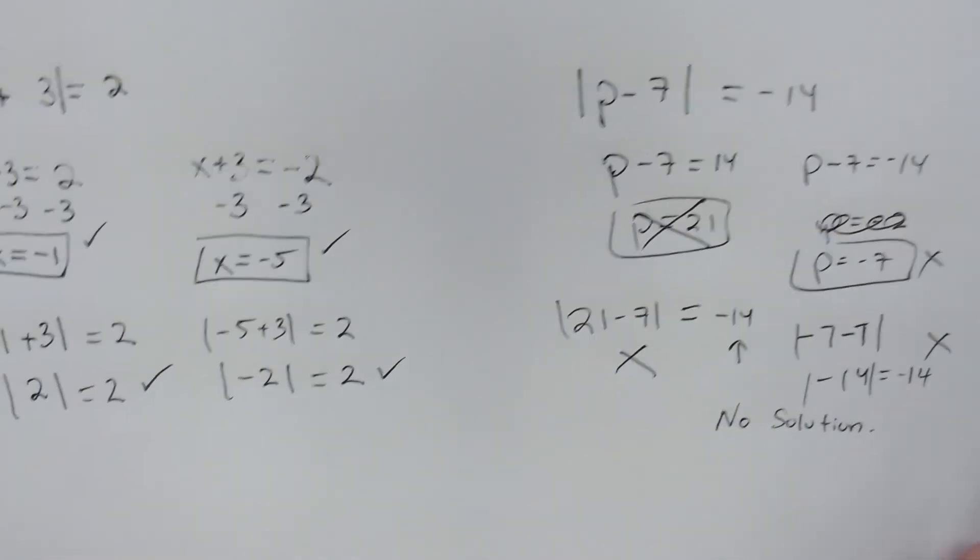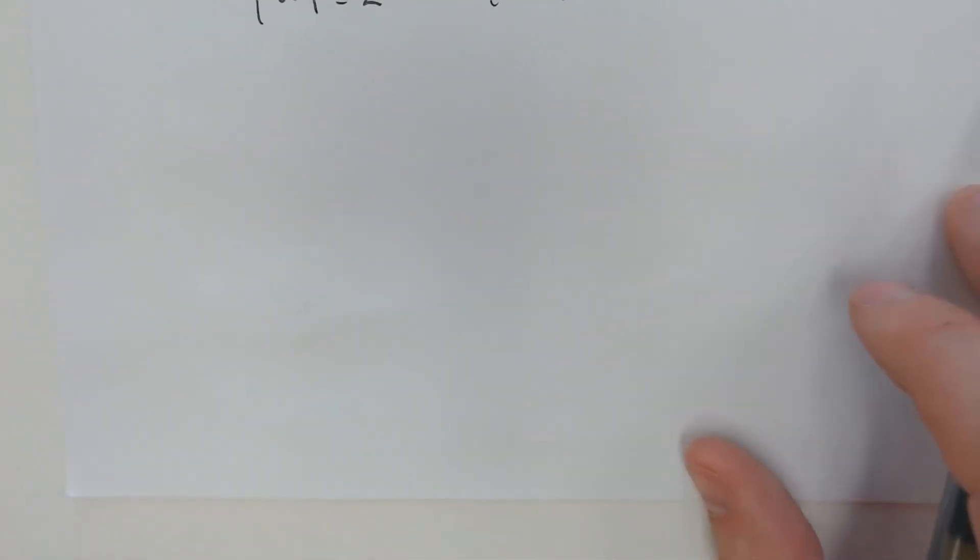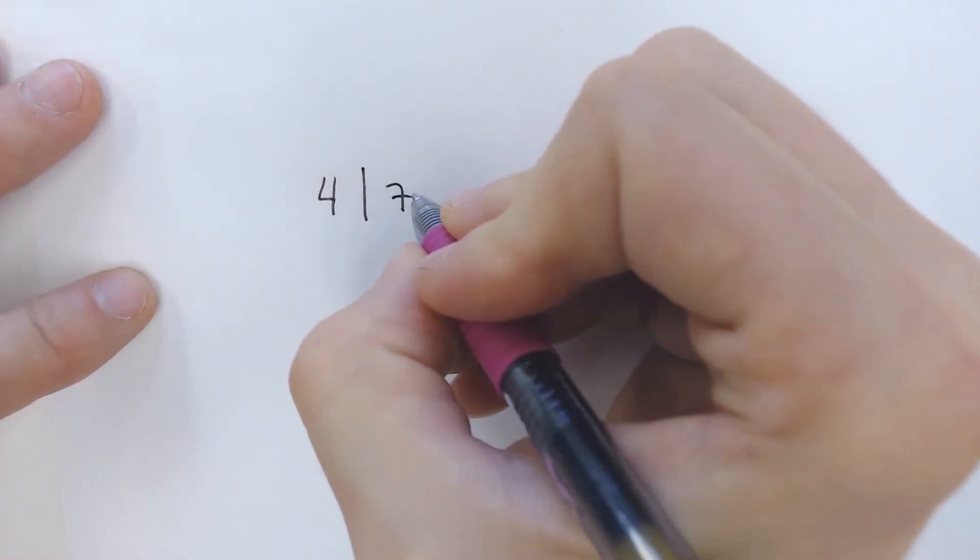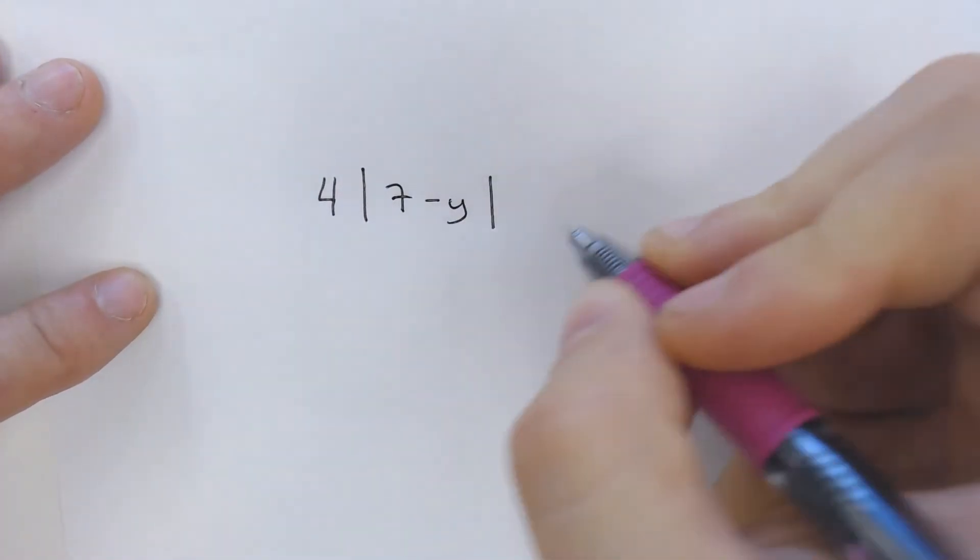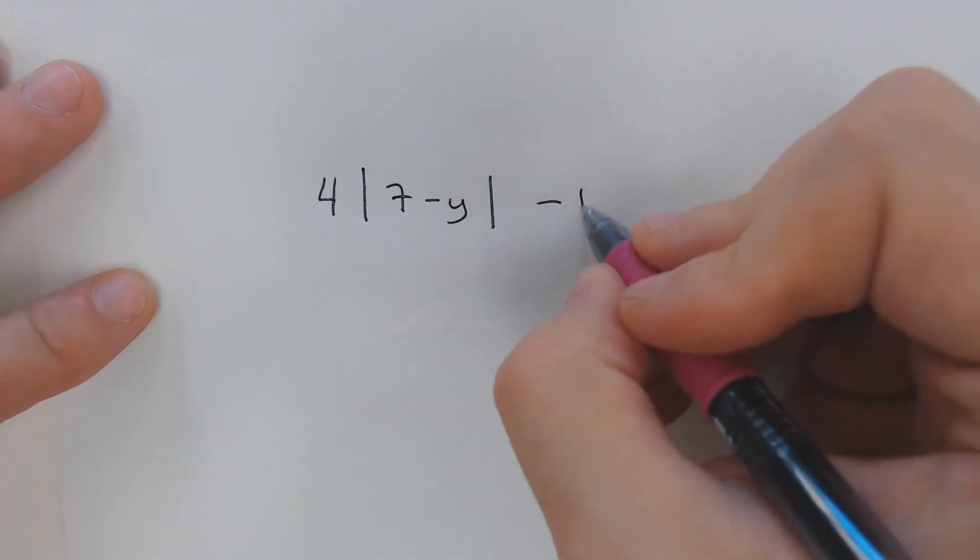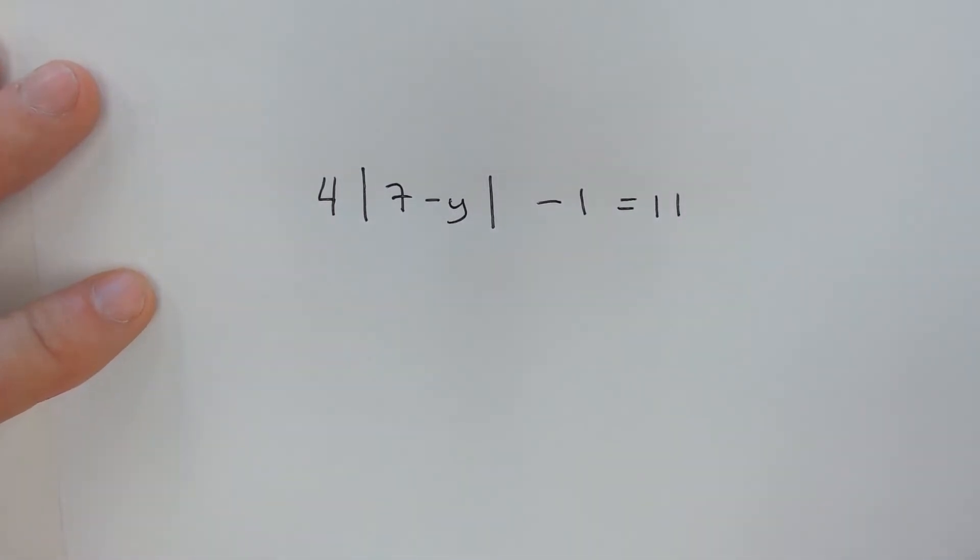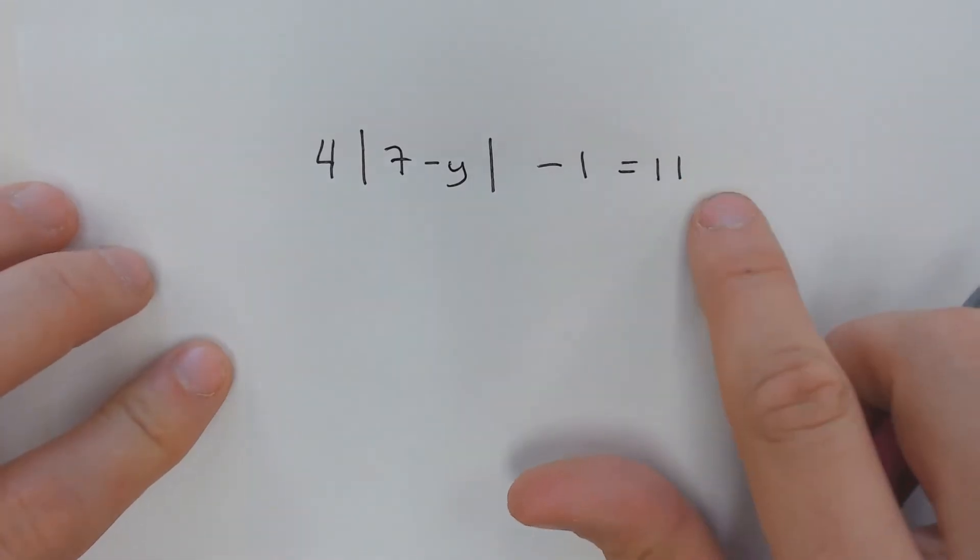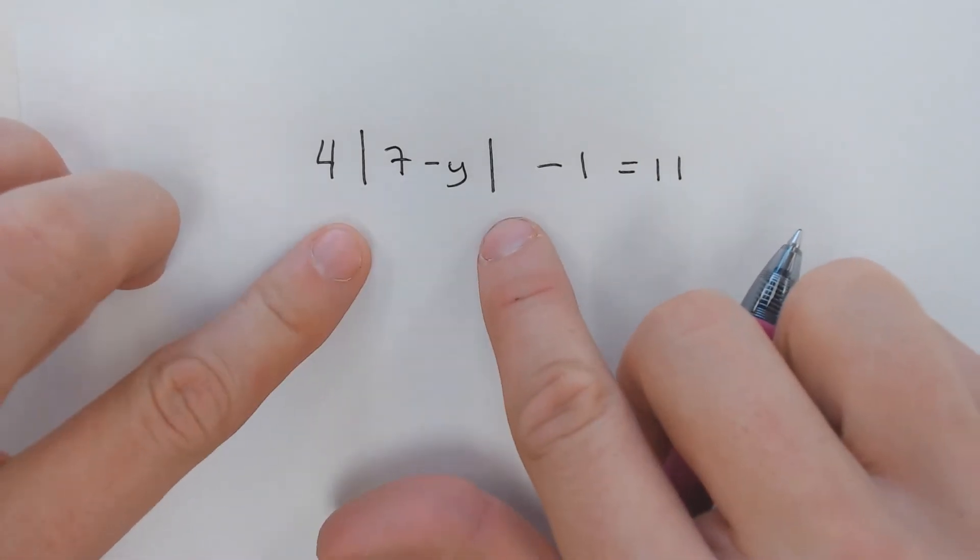Let's deal with a little bit of a more intricate problem. Let's say we have something like this, where we have a number in front for absolute value: 4 times absolute value of 7 minus y, minus 1 equals 11. Well, if you have a problem like this, you need to get the absolute value bars by themselves first. Forget the fact that it's a positive number. We need to figure out how to get these absolute value bars by themselves.